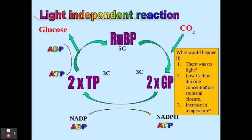The next factor is a low carbon dioxide concentration, which will happen where there is stomatal closure. Don't forget the stomata will close if, for example, it's a hot day and the plant wants to conserve its water by preventing evaporation through the stomata. As a result of this, I'm going to get a low concentration of carbon dioxide inside the leaf.